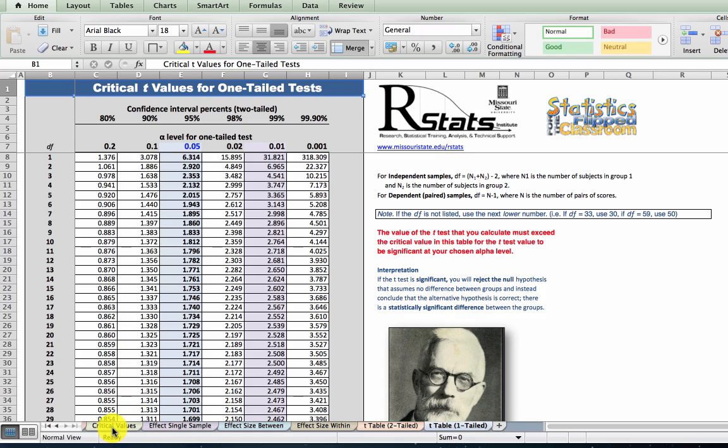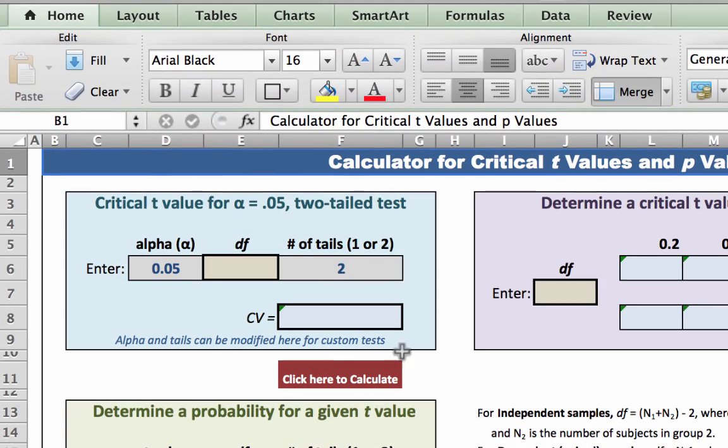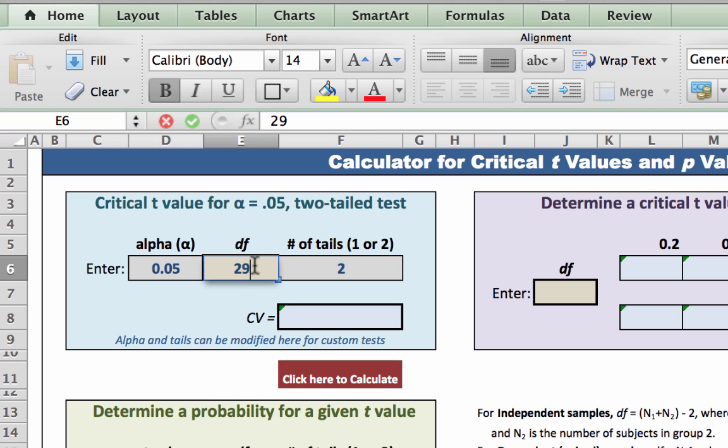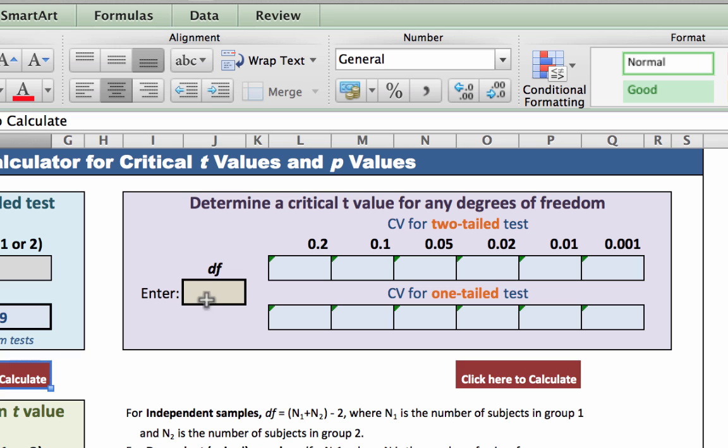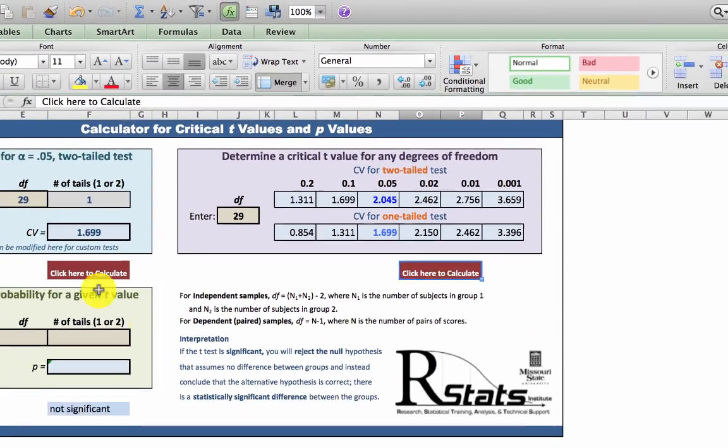Click on the green tab for critical values. In the upper left, we have the typical setup for alpha equals 0.05 two-tailed test. However, we can modify these settings. Enter your degrees of freedom, 29, and then change it to a one-tailed test. The critical value is a positive 1.699. And if you enter any degrees of freedom here, you get critical values for both one- and two-tailed tests at a variety of alpha levels. I will tell you more about this green box in a moment.